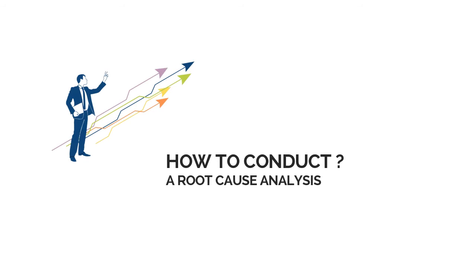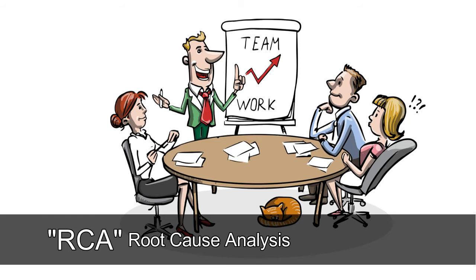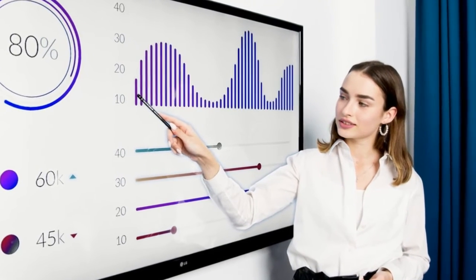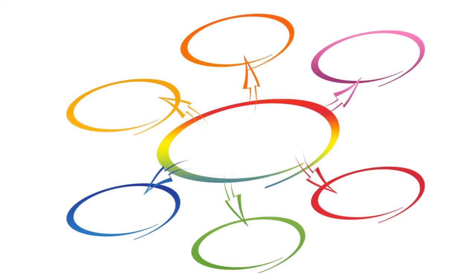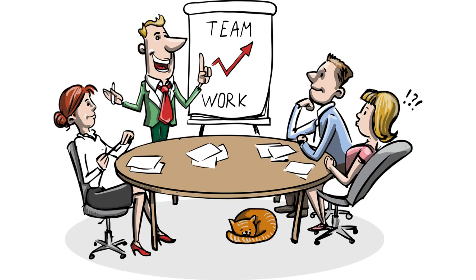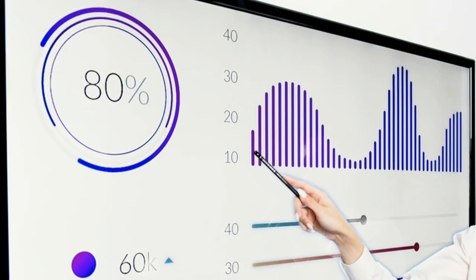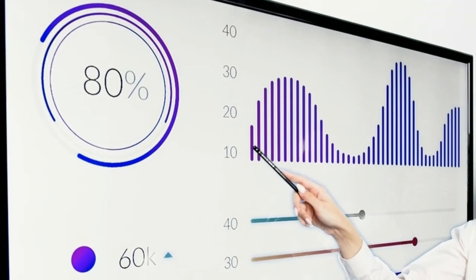How to Conduct Root Cause Analysis? The main goal of RCA is to identify the root cause of the problem. The first and possibly most important step is to identify possible causal factors. The RCA team should set the vision, identify the problem, and collect as much data as needed to better understand the situation. That data can then be used to identify causal factors.